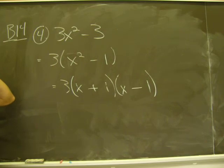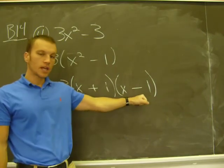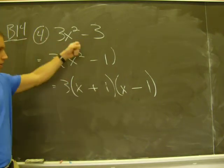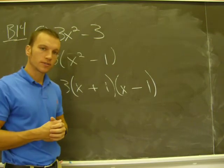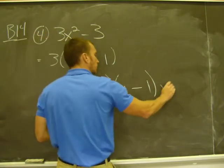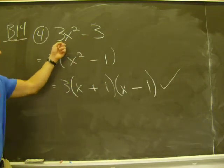Remember, we can always check these to see if it's right. I can multiply these two together, and then multiply it by three, and it should end up there, okay? So, if you have time on the test, make sure you check all your answers. Alright, that's my answer for this one. That is the factored version of that.